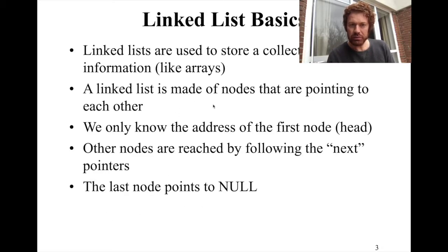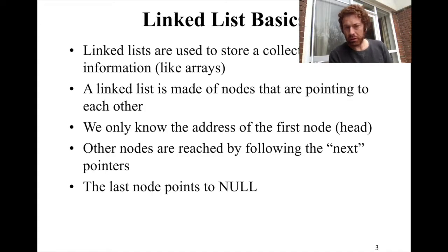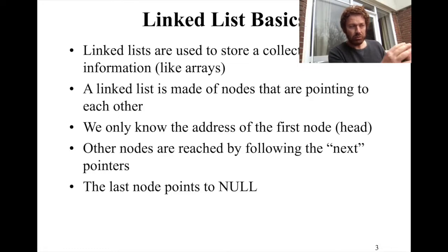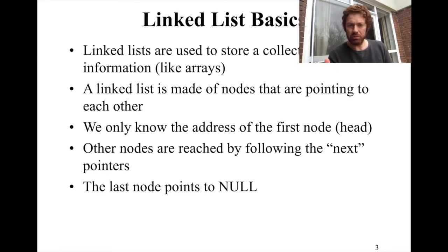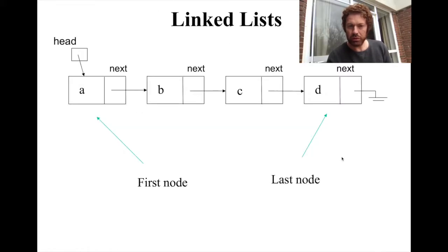Basically, a linked list is made of nodes that are pointing to each other, and the locations of these nodes in memory is totally arbitrary. In an array it is not arbitrary — you have a contiguous block of memory, so you can go to the next item by just doing some arithmetic, like adding some offset. But in a linked list you don't have any offset; you need to follow your next pointers.